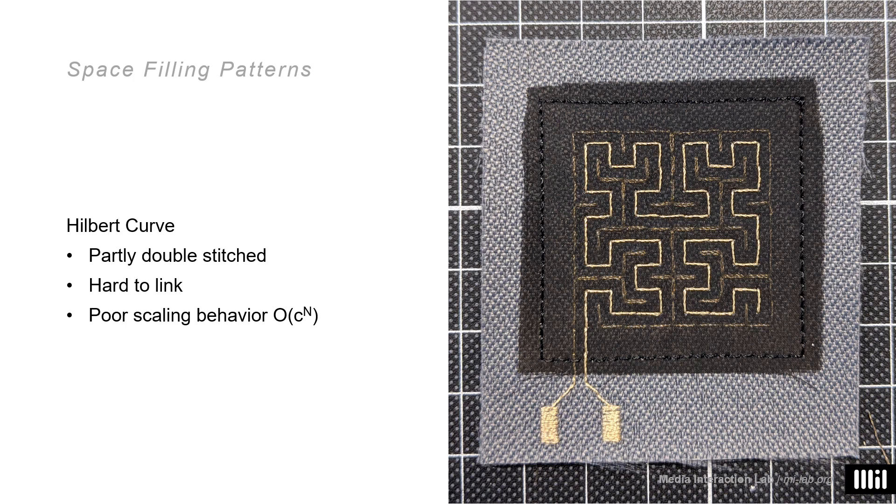Lastly, the Hilbert curve is an example of a space-filling curve from mathematical analysis, so we decided to include one of those as well in our evaluation as they frequently show up. It shows no intersections; however, for linking multiple of those, you also have to double stitch most parts, just like with the Fermat spiral. The reason is there is a dead end for the upper electrode right here, and to guide the needle back out again without introducing an intersection, you would have to stitch all the way back.